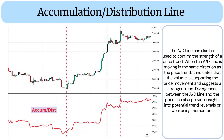The AD line can also be used to confirm the strength of a price trend. When the AD line is moving in the same direction as the price trend, it indicates that the volume is supporting the price movement and suggests a stronger trend. Divergences between the AD line and the price can also provide insights into potential trend reversals or weakening momentum.